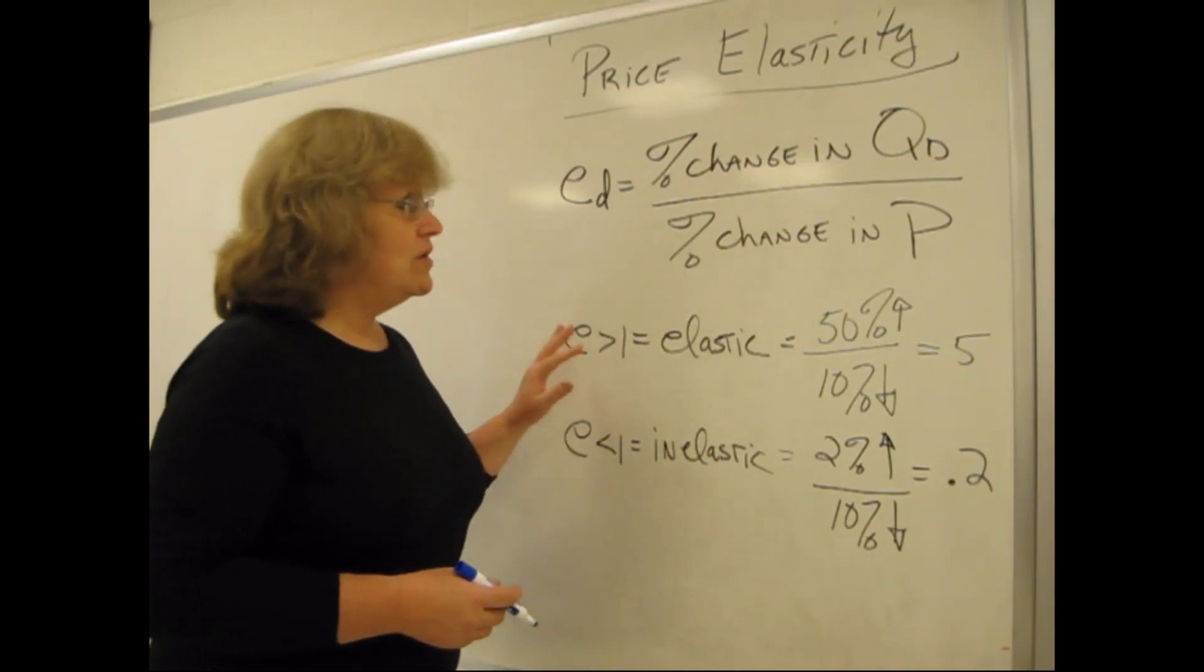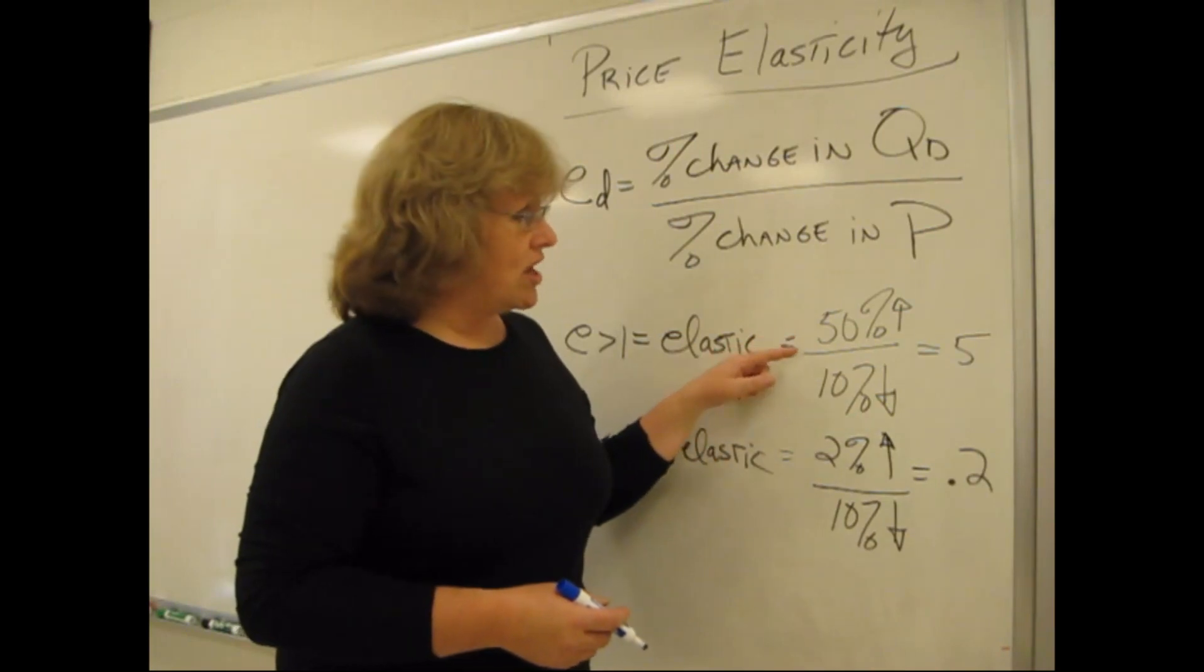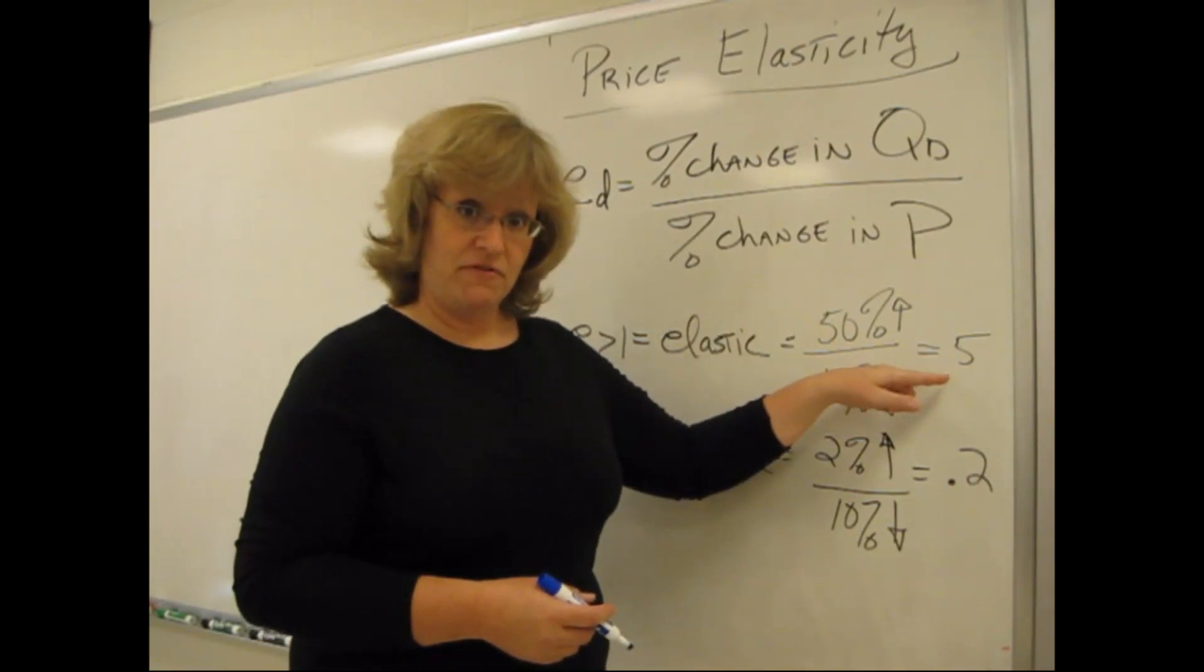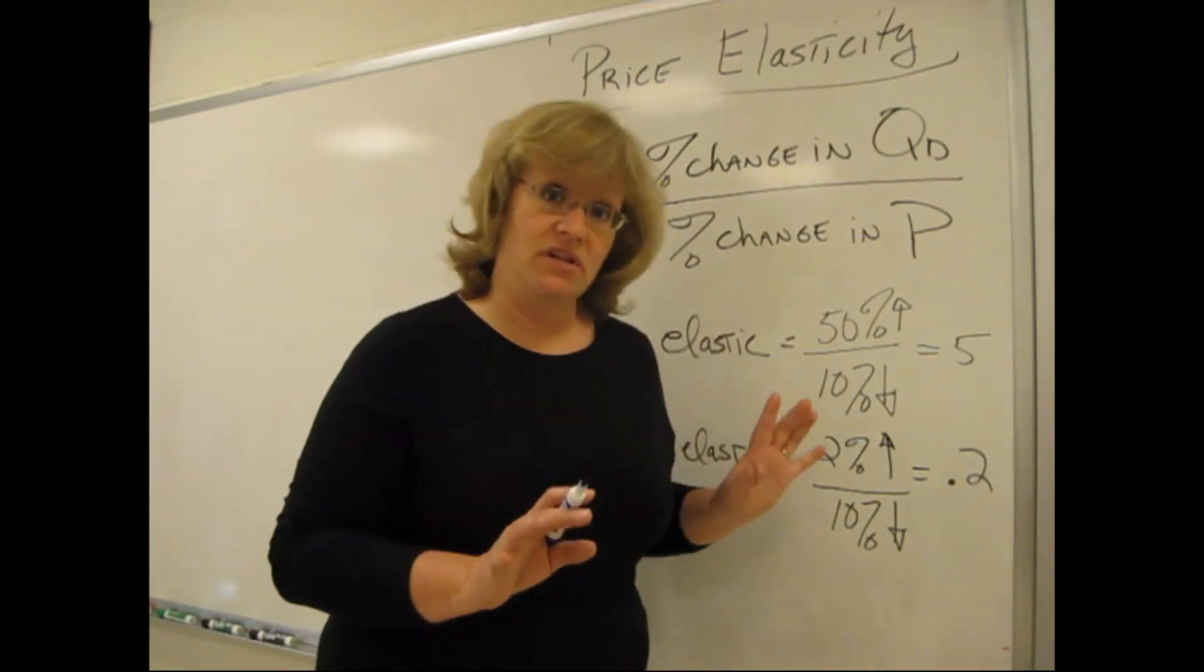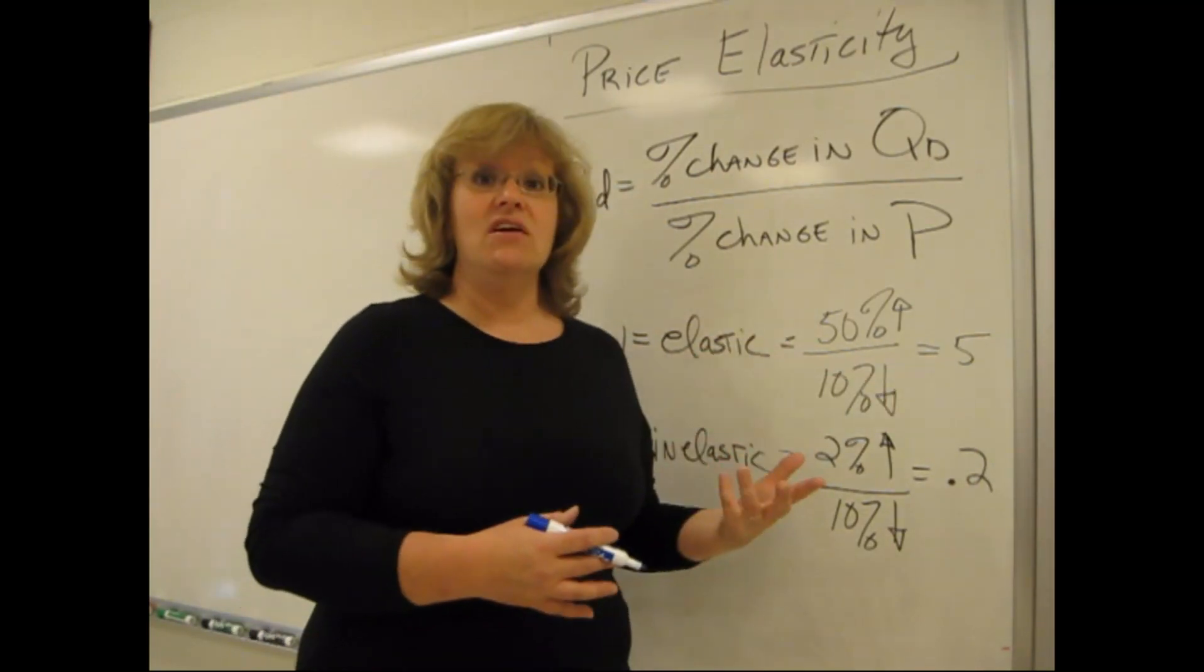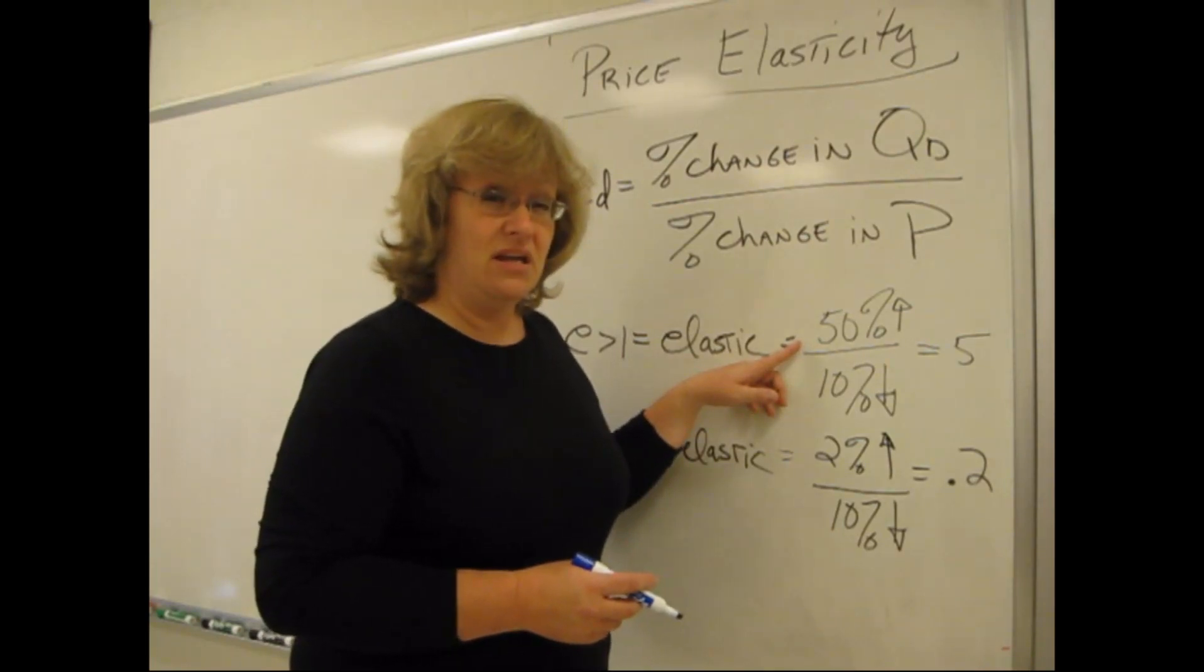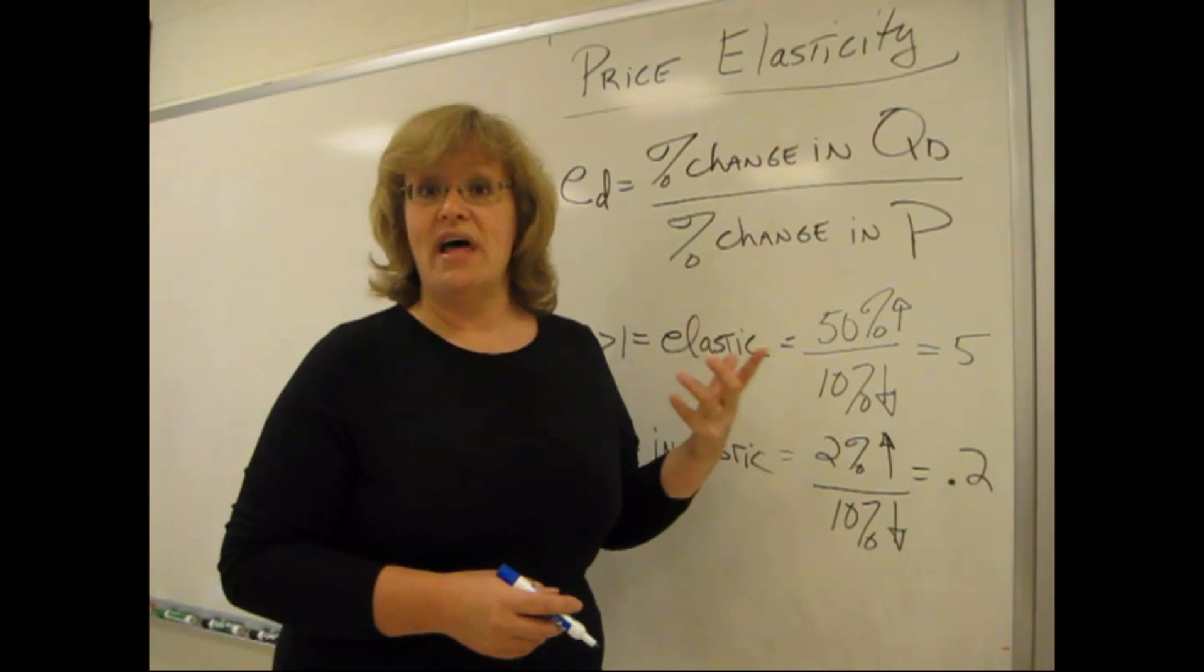For example, you could get a number greater than one if a 10% drop in price caused a 50% rise in quantity demanded. 50 divided by 10 is 5. We're going to be talking about the absolute value of elasticity. We're going to ignore effectively the negative number. And so 50 divided by 10 is 5. That gives us an elastic demand. That's pretty responsive. A 10% drop in price causes a pretty big increase in the amount that people want to buy, a 50% rise.